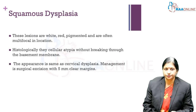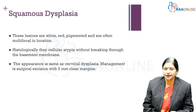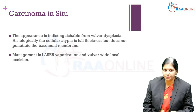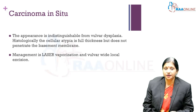Squamous dysplasia is a white, red, or pigmented lesion, usually multifocal, with an appearance similar to cervical dysplasia. It can be excised with a 5 mm clear margin; it represents cellular atypia without breaking through the basement membrane. Carcinoma in situ is similar to vulval dysplasia but with full-thickness cellular atypia that does not penetrate the basement membrane. It can be treated by laser vaporization or vulval wide local excision.